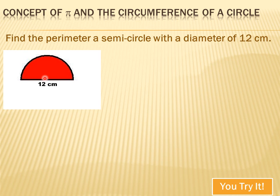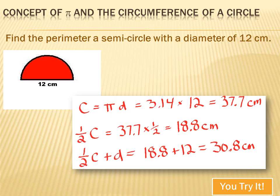So, with that in mind, I think you can solve this problem. The circumference of the entire circle would have been pi times the diameter or pi times 12 or 37.7 centimeters. Half of that circumference would be half of 37.7 or 18.8 centimeters. Now, to that 18.8 centimeters, which takes me from there to there, I've got to add that, or 12 centimeters. So, when I add 12 to 18.8, I get 30.8 centimeters.